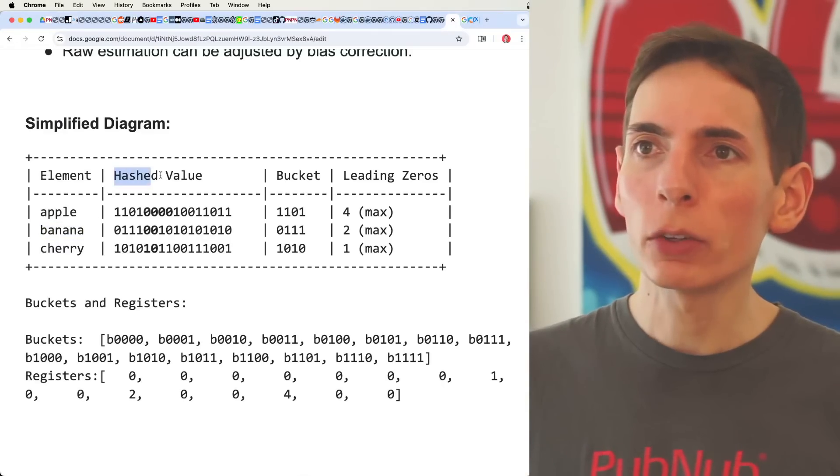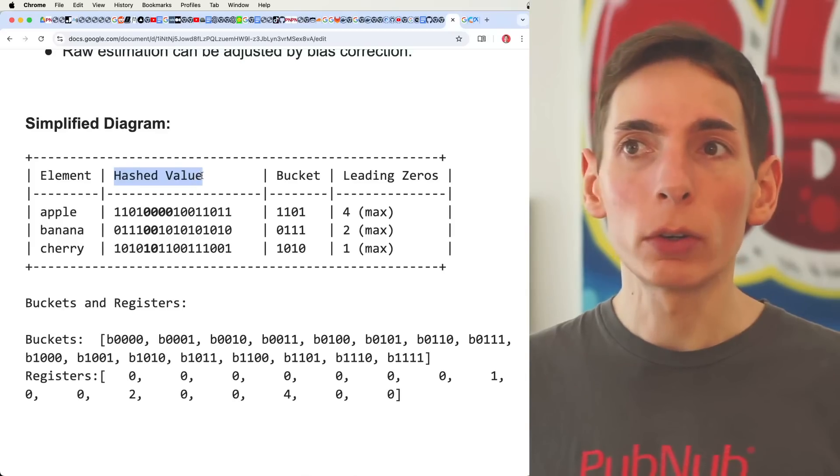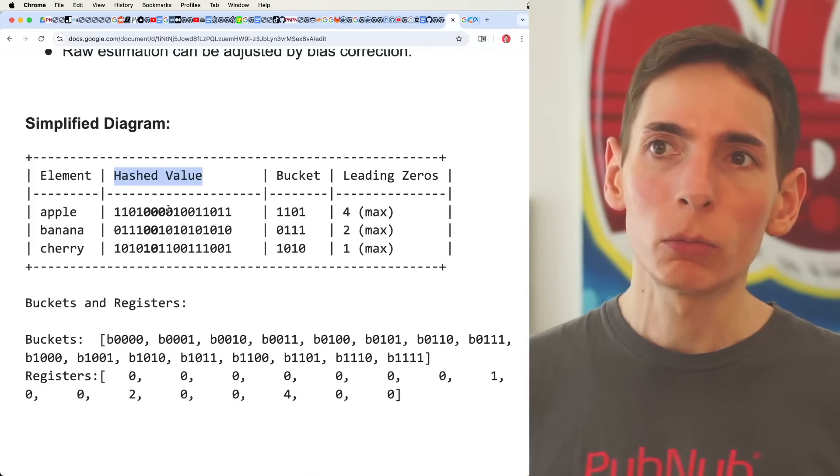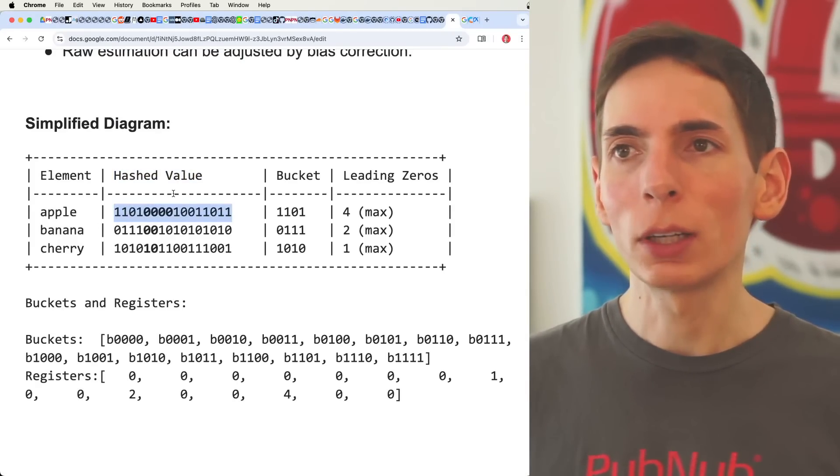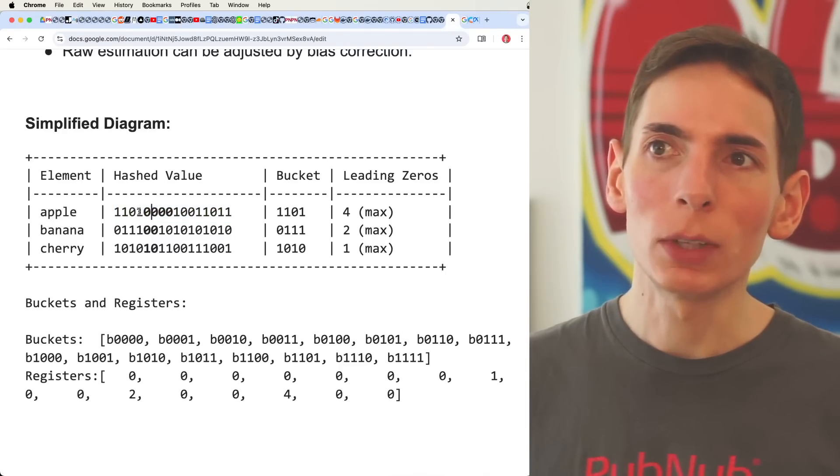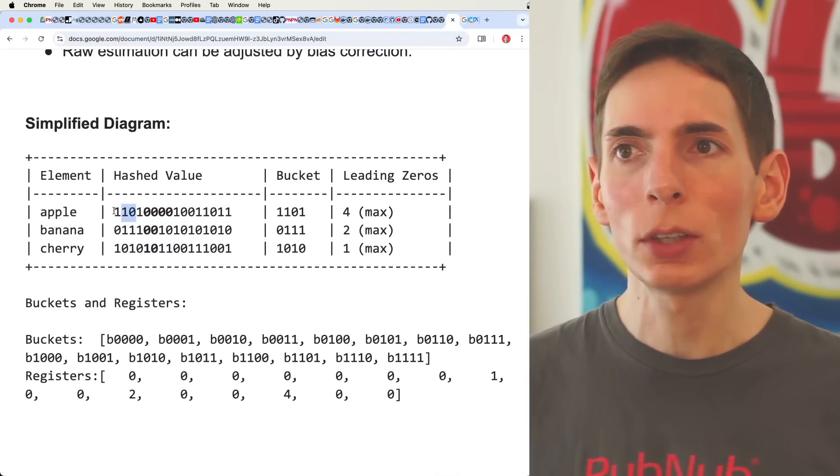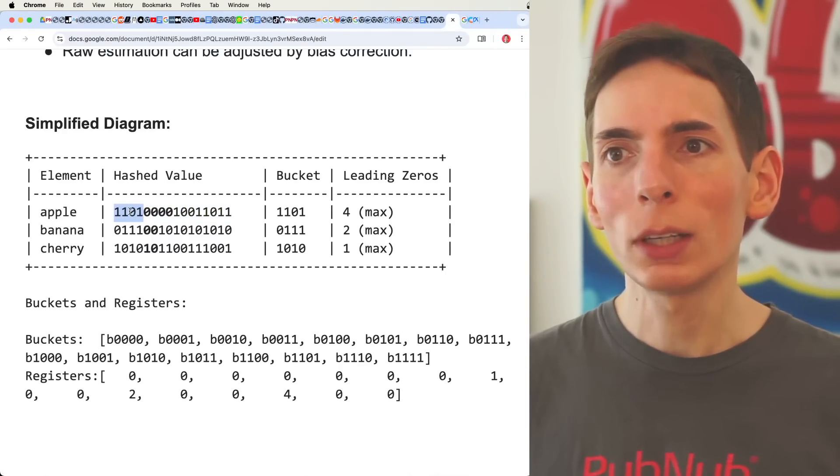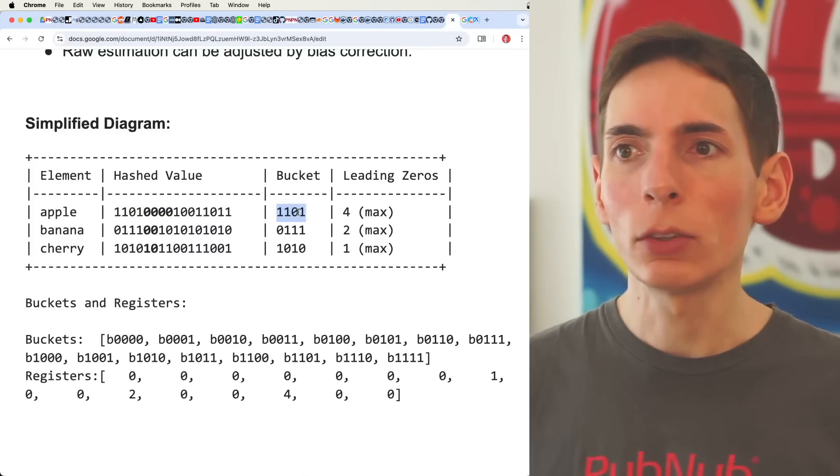We hash the value using any sort of hashing algorithm that will turn our string, which would be apple, into binary string. This is what that looks like.